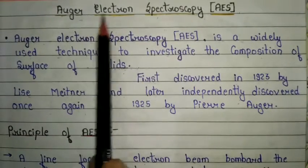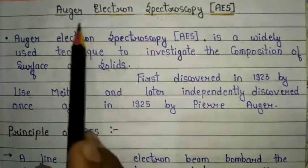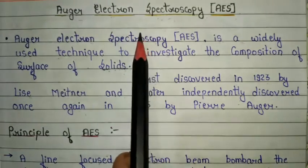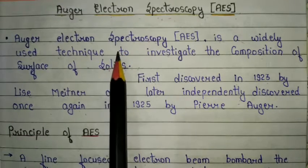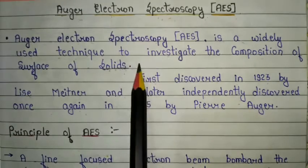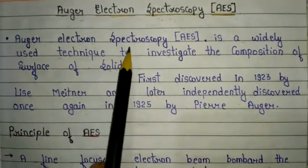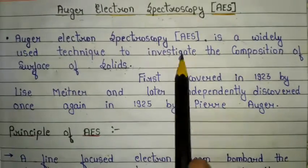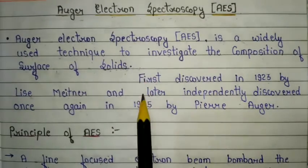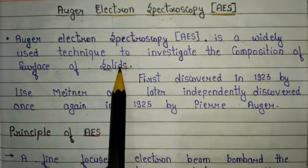The first topic is Auger electron spectroscopy, also referred to as AES. Auger electron spectroscopy is one of the important topics of scattering spectroscopy, and it is also very important from the semester exam and CSIR NET exam point of view. The basic introduction: AES is a widely used technique to investigate the compositions of the surface of solids. In AES, we only use the solid form of sample.